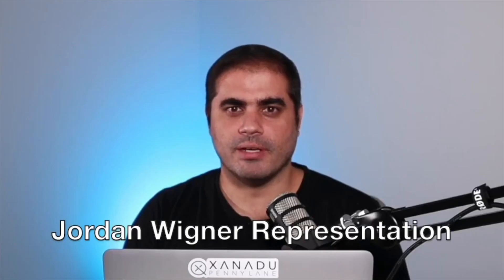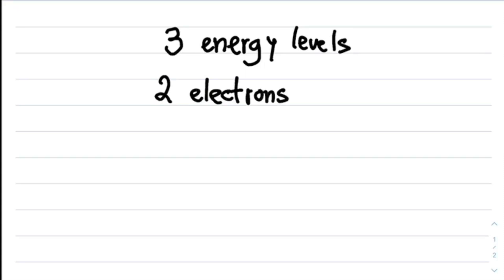The way that this is done is through the Jordan-Wigner representation. So how does the Jordan-Wigner representation work? Let's see with an example. Suppose that we have three energy levels, and that we have at most two electrons per energy level.